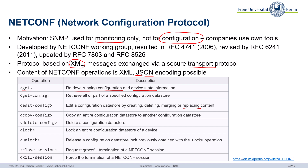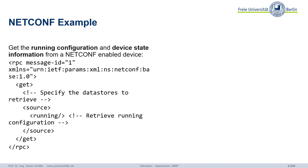We can copy configuration from one data store to another, lock it, unlock it, etc. There are more powerful operations in NETCONF compared to SNMP. An example: could you please get me the running configuration and the device date from a device that runs NETCONF? This is coded as an RPC — a Remote Procedure Call — and this RPC contains our get command.